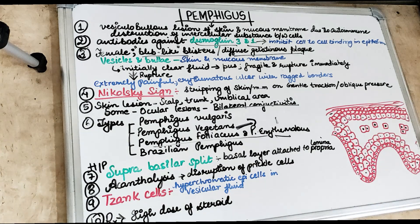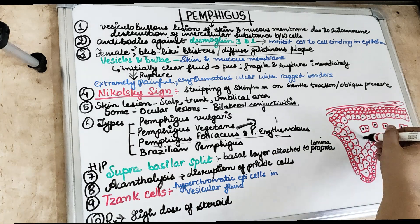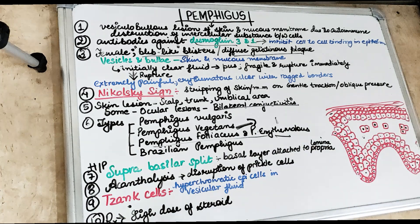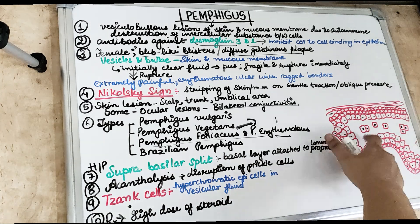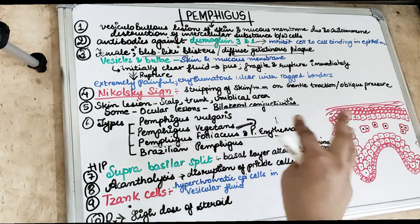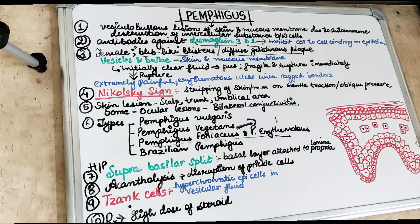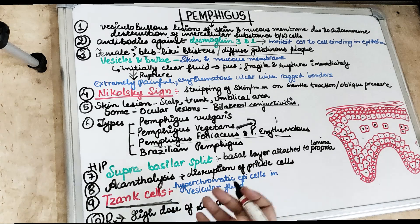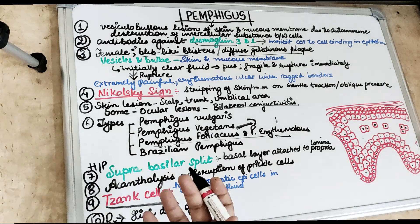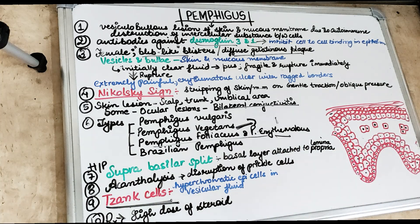This results in acantholysis, causing disruption of the prickle cells. Because of acantholysis, there are clumps of epithelial cells called Tzanck cells. These are hyperchromatic desquamated epithelial cells seen freely floating in the vesicular fluid within the suprabasilar split. Tzanck cells are frequently asked about in exams — they are the hyperchromatic desquamated cells present in the vesicular fluid in the spinous layer in case of pemphigus vulgaris.